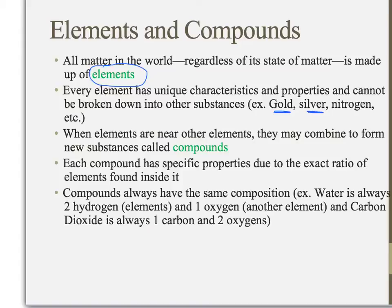When two elements — or even more than two — come together, they form a compound. For example, sugar has carbon, hydrogen, and oxygen in a pretty specific ratio. When these three elements come together in a certain pattern, they form a compound known as sugar. Compounds are whenever multiple elements come together and form a new substance. Just like each element has its own specific properties, each compound has its own specific properties due to the exact ratio of elements found within.